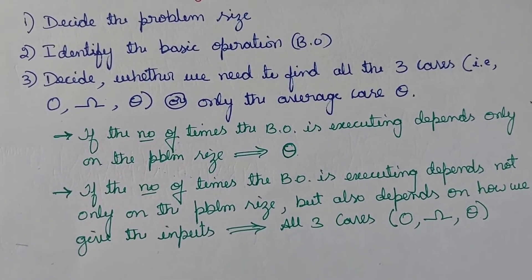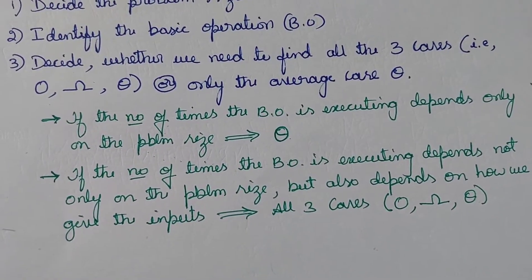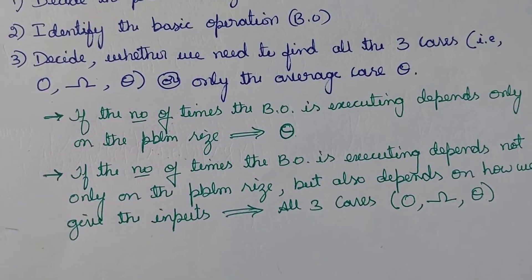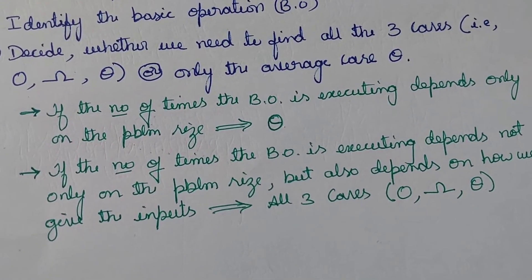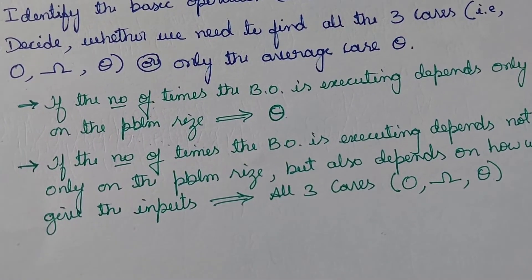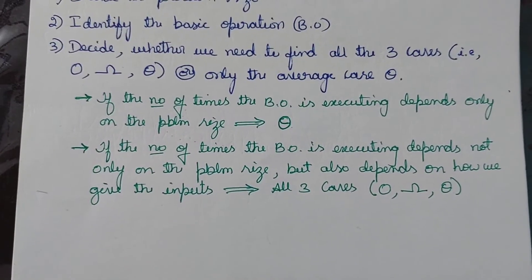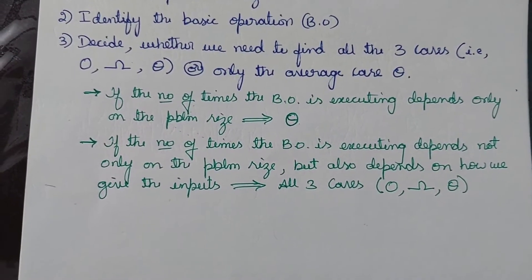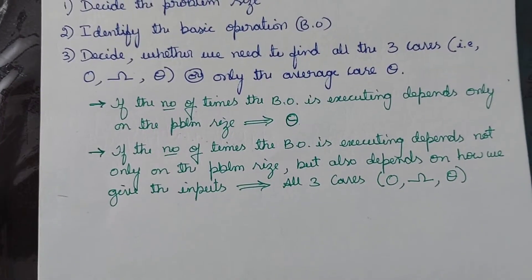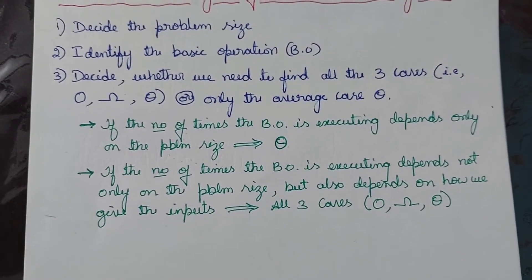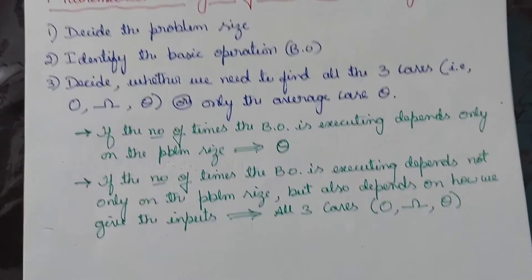If the number of times the basic operation executes depends not only on the problem size but also on how we give the inputs, then we need to find all three cases. When we give multiple inputs, we can give them in many orders or combinations. In those cases, we need to find all three cases — that is the key decision in step three.